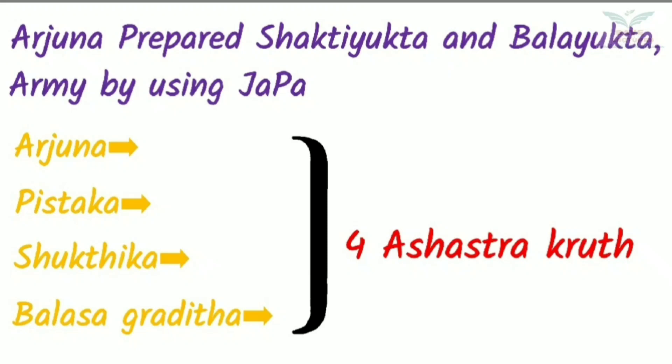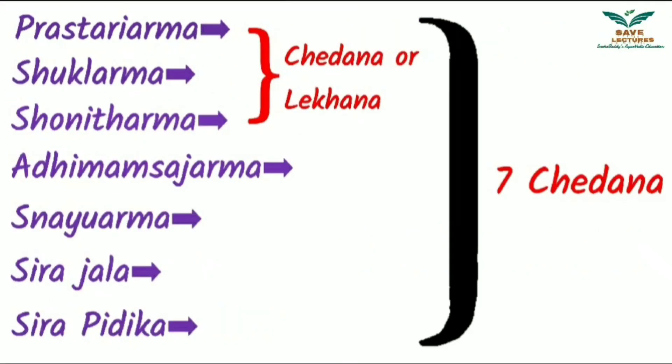Moving on to the Chikitsa — among the eleven, four are A-Shastra Kruta. These are Arjuna, Pishtaka, Shuktika, and Balasa Gratita. From our mnemonic line — Arjuna prepared Shakti Yukta and Bala Yukta Army by Japa — the remaining seven, that is the five types of Arma, Shira Jala, and Shira Pedika, are Shastra Sadhya. Mainly Chedana is indicated in Shuklagatha Rogas, but in Prastari Arma, Shukla Arma, and Kshataja Arma, Chedana or Lekana is indicated according to the disease condition.